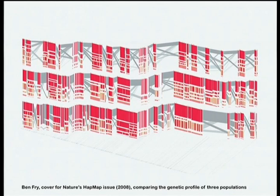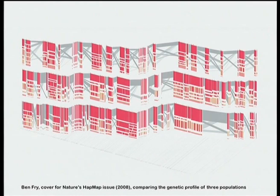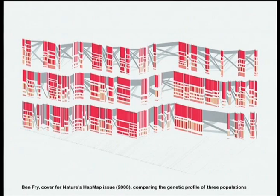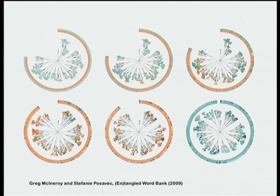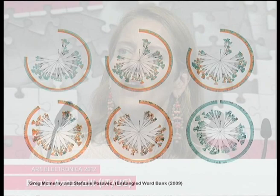Ben went on to work with Nature magazine. This is a beautiful cover from 2008 in which, by comparing the genetic set of three different populations, you can see the variations and distances between them. The dataset is complex and requires scientific literacy, but the compelling image draws you to try to understand more even if you don't, while scientists are satisfied because it's perfectly exact data. Ben is one of the first examples from the MIT Media Lab — from Muriel Cooper's school and then John Maeda — that showed designers as well as engineers that the database is a viable avenue for work with aesthetic and functional satisfaction.